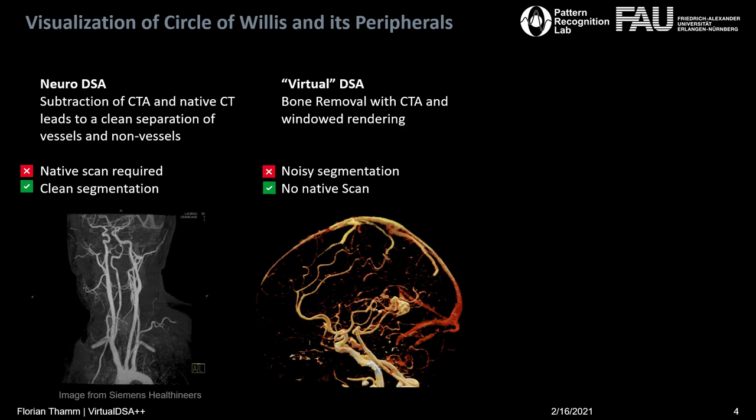Then there is what I call Virtual DSA, or sometimes Pseudo-DSA. You take a CTA dataset, you remove all bone structures, and then you render with the best window you can find, and what's left is what we can see here at the bottom right. As you can see, it's quite noisy, but it needs no native scan, which is nice.